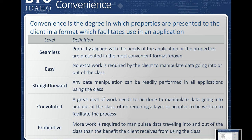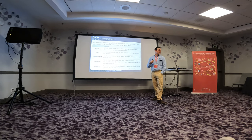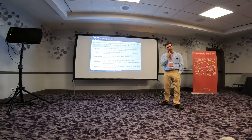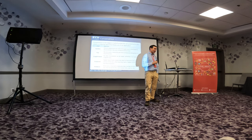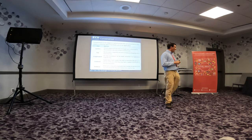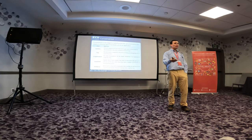The first is convenience — the degree to which the properties are presented to clients in a format that facilitates use in their application. In other words, the class is meant to serve the rest of the program. Prohibitive means I'm not helped at all; seamless means it's so easy to integrate the design into the overall application that it's effortless. Is this valid? Yes, it aligns with what the literature says makes for a good class design. Is it reliable? There is a degree of subjectivity here — convenience is a personal matter from the perspective of the person using the class. But we cannot increase reliability without taking a hit on validity, and taking a hit on validity is unacceptable.